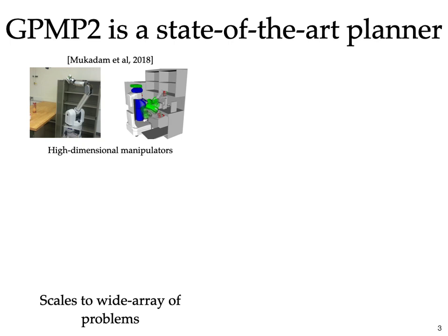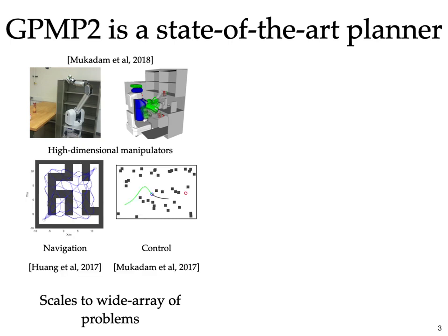The Gaussian Process Motion Planner 2 is a leading optimization-based approach to motion planning that has been shown to scale to a wide array of problems such as planning for high-dimensional manipulators, navigation, and model predictive control.